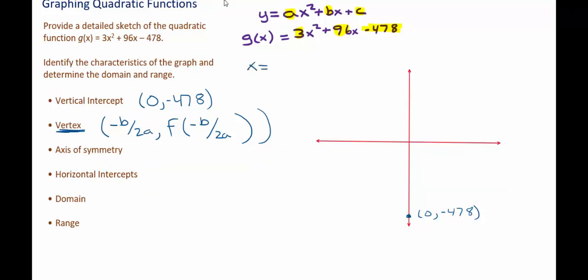So the x value of the vertex is negative b. It's important to realize that the a is in the denominator as well as the 2. So in my case, since b is 96, this will be negative 96 divided by 2 times a, but a was given to be 3. So this comes out to be negative 96 divided by 6, which is negative 16.